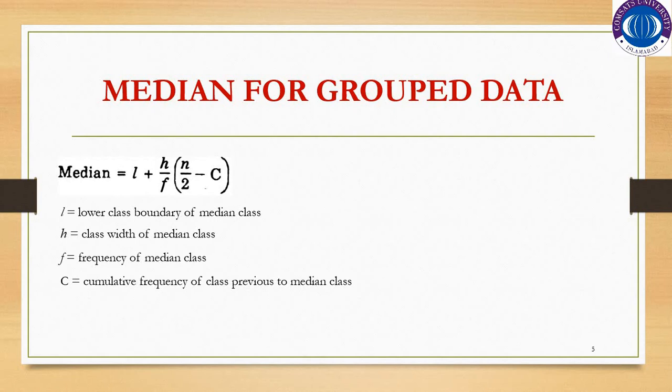The next measure is the median for grouped data. As we discussed previously, for ungrouped data if the number of observations is odd the middle value of the arranged data is the median, and if even, the arithmetic mean of the middle two values is the median. For grouped data, however, we must use the formula: Median = L + (h/f) × (n/2 − c).